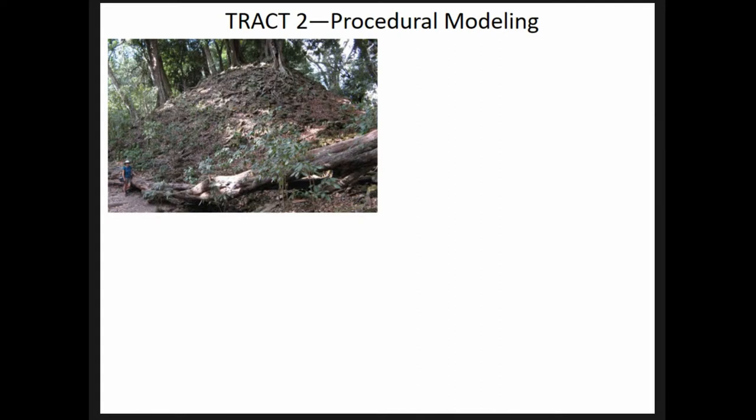Before I talk about track three, I want to talk about track two. We've been approaching this from the back end by looking at procedural modeling. Our goal is to generate a 3D model library of ancient Maya architecture. We're using procedural modeling, which allows us to rapidly generate 3D models based on a set of rules. To create these models we're using CityEngine, a 3D software that allows us to create 3D models not only from a set of rules but also from a linked spatial database.